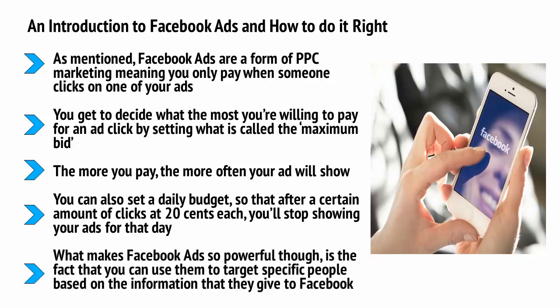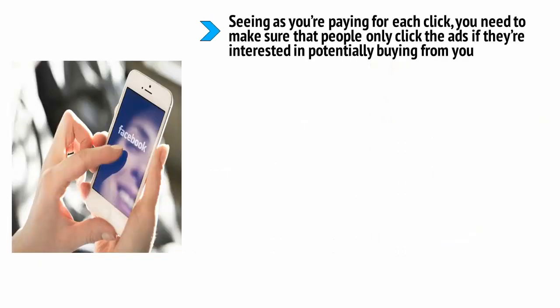What makes Facebook ads so powerful is the fact that you can use them to target specific people based on the information they give to Facebook: their age, their sex, their location, as well as their interests, their relationship status, and even their income. Seeing as you're paying for each click, you need to make sure that people only click the ads if they're interested in potentially buying from you. Therefore, you want to make sure that only the right kind of person sees your advert.